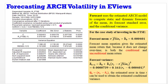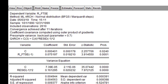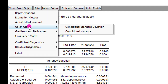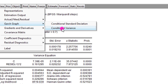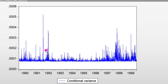So whenever you get your ARCH model output, you can easily generate the forecast mean and also the forecast conditional variance. Let us proceed to EViews to generate the plot of the conditional variance. To do that, we go to View, navigate to GARCH Graph, click on Conditional Variance, and there you have it.